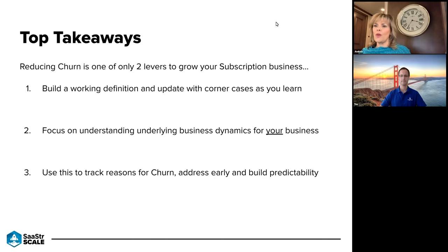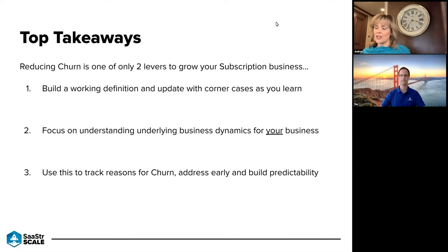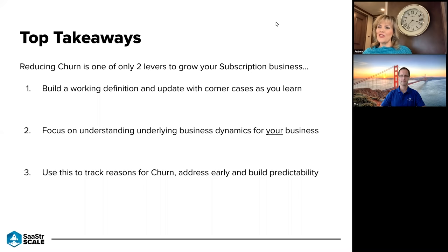It's all about focusing on those underlying business dynamics for your individual business — taking best practices and marrying them with what you know about your business to come out with what works for you. You also have to track the various reasons for churn, because it's just as important to know why things are going well as why they're not. That leads to predictability — which in this business is likely the most important thing. You can predict where you're going to land once you know the metrics so well you have a feel for where your business is.